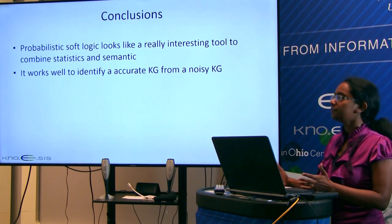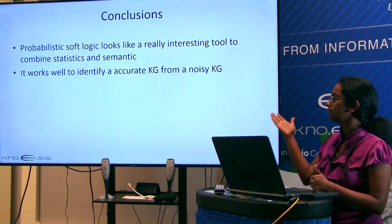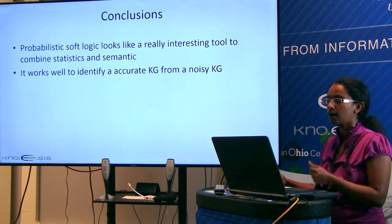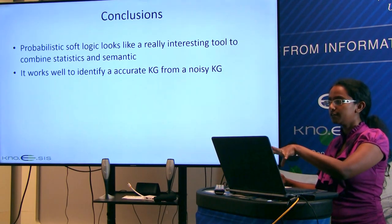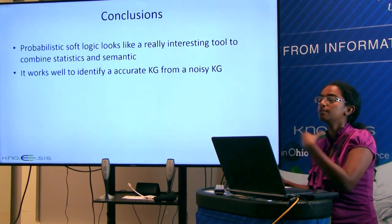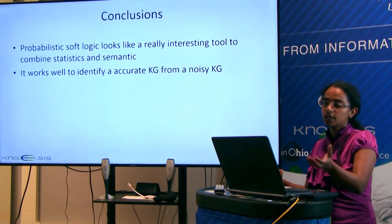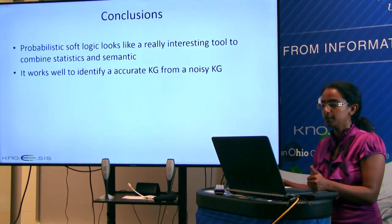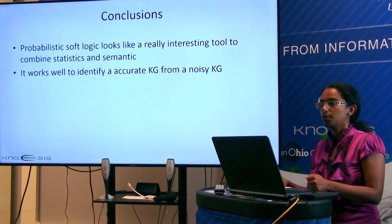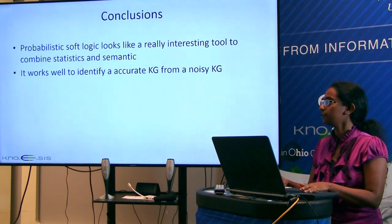With NELL, since it has its own heuristic rules to remove noise, they used that as a baseline. Using the probabilistic soft logic approach, they were able to improve recall from 0.4 to 0.8. The probabilistic soft logic approach is a really interesting tool to combine semantics and statistics for accurately identifying a knowledge graph from a noisy one, and it can also be applied beyond knowledge graphs to any scenario with heuristics that need reasoning.